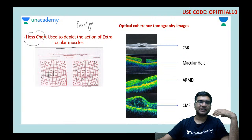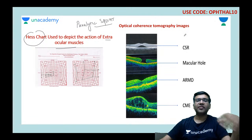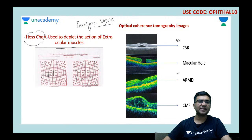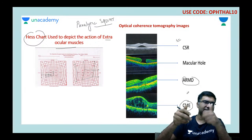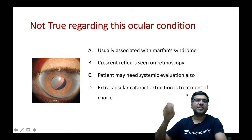To summarize the OCT images: elevation of retina with foveal detachment is central serous retinopathy; absent layers at fovea is macular hole; elevation of RPE is ARMD; and cystic spaces at the macula are cystoid macular edema.